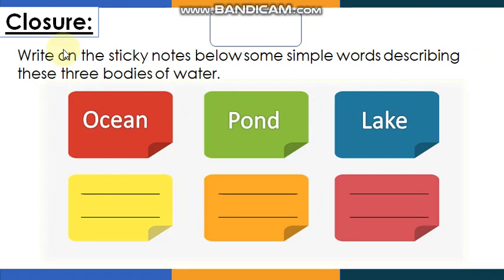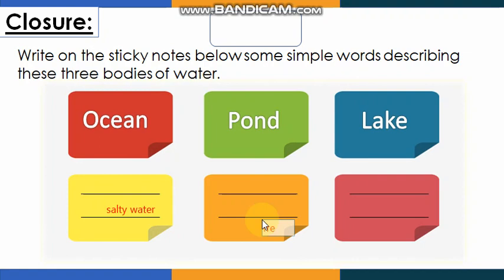Finally, write on the sticky notes below some simple words describing these three bodies of water. What can we say about the ocean? It has salty water. What about the pond? It has fresh water. And the lake? It also has fresh water but is much bigger than the pond. Well done!